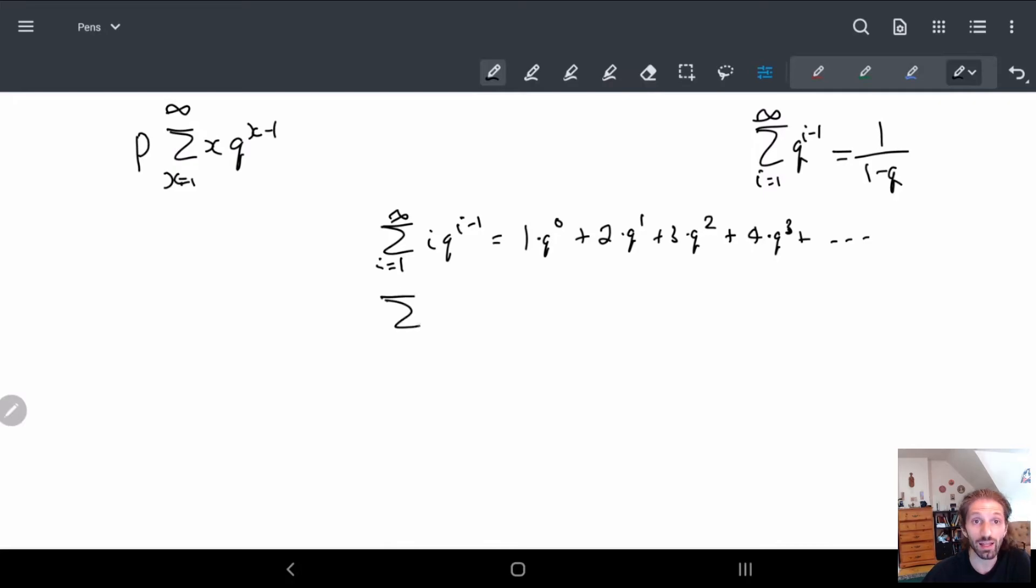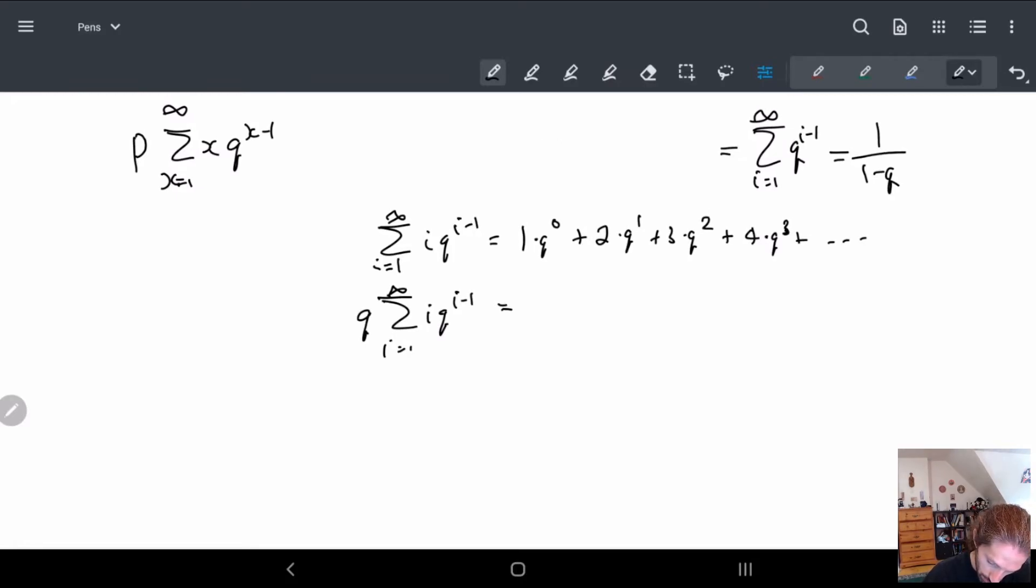And then let's look at the same thing but I'm going to multiply by Q. So Q times i Q to the i minus 1, and basically what I'm trying to do is I'm trying to find this formula, so this on the right hand side is Q to the 0 plus Q to the 1 plus Q to the 2 plus Q to the 3, etc.